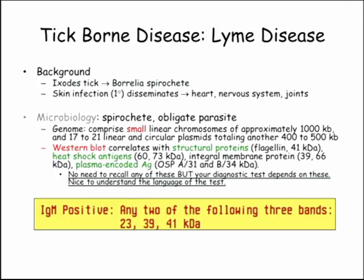Some microbiology here. They're not going to ask you this specifically. The only reason I'm showing you this is because when you order the test, the results come back with bands — IgM and IgG. For IgM, you have to have two of three bands. For IgG, five of ten. The bands are made up from different proteins: structural proteins, heat shock antigens, plasmid-encoded antigens, outer surface proteins. These are antigens seen on Western blot analysis.